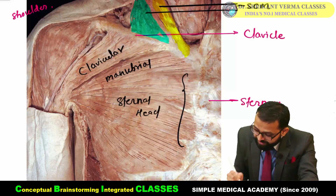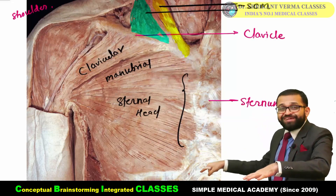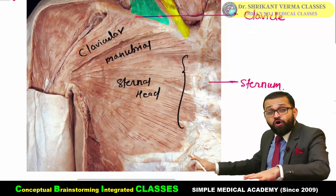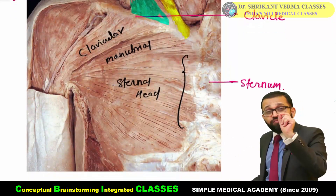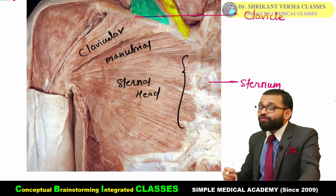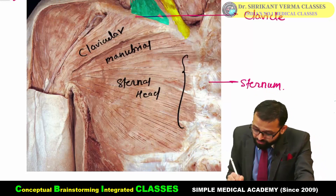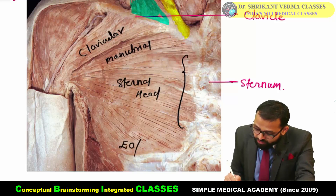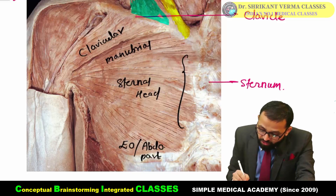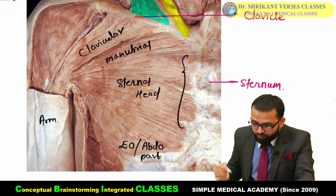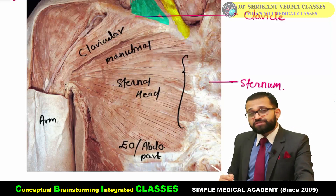The large portion represents the external head, and the portion coming from the abdomen originates from the flat tendon of the external oblique — known as the external oblique aponeurosis — so this is the abdominal part of pectoralis major. All these muscle heads are going toward the humerus — the arm portion.